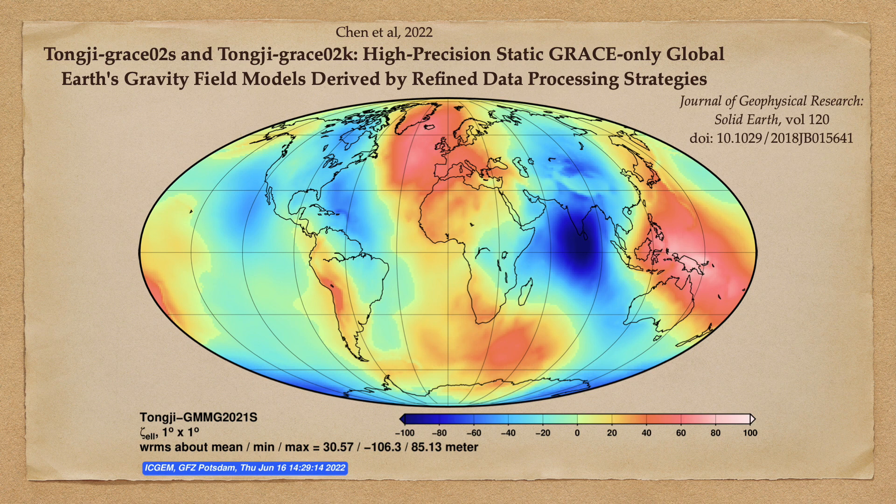The results of our analysis demonstrate that the geoid is generally within 100 meters of the reference ellipsoid, but that there are significant variations in geoid height. In other words, the equipotential surface coinciding with mean sea level is not flat.